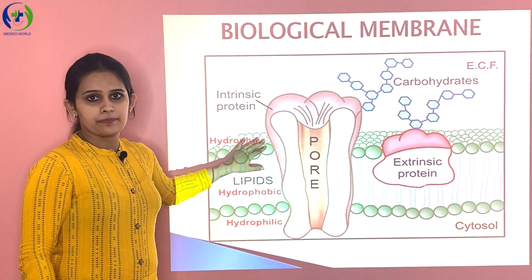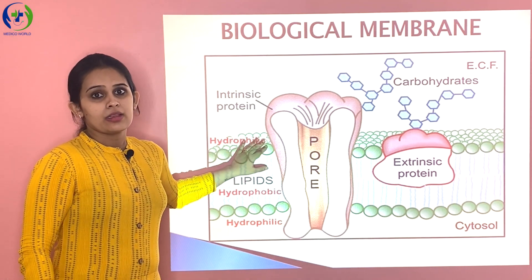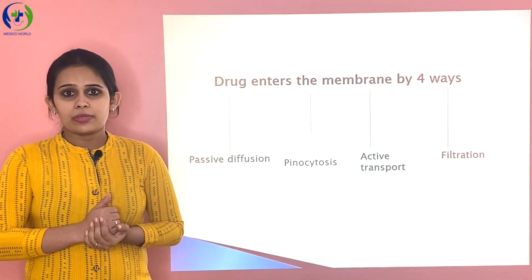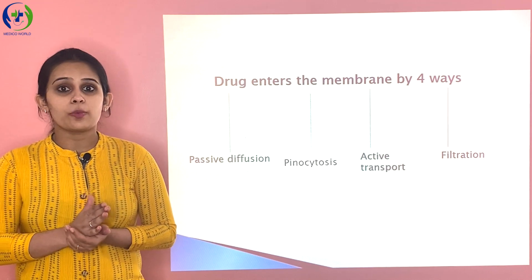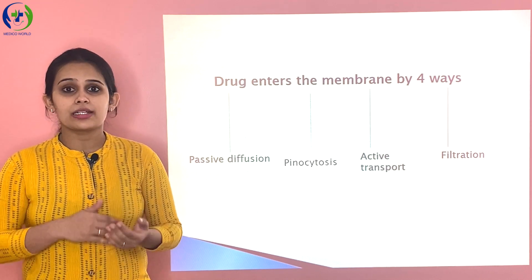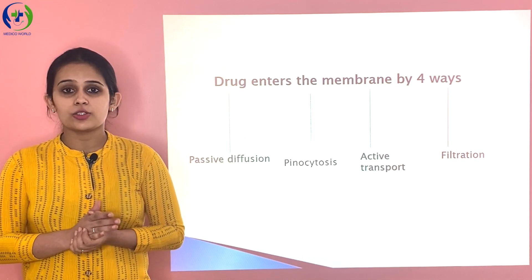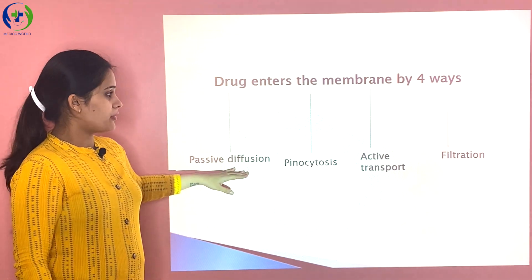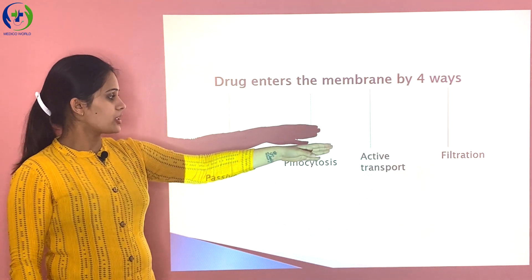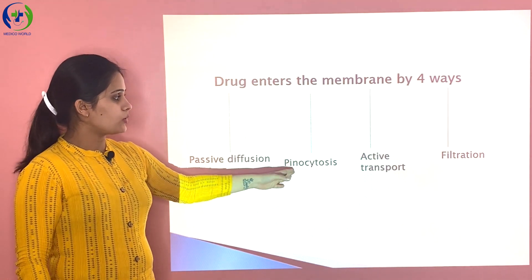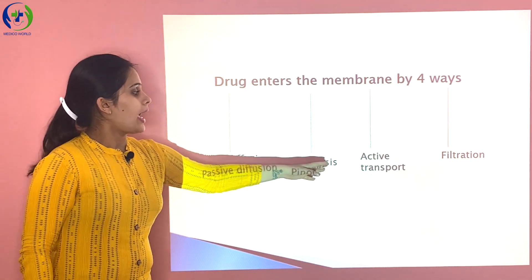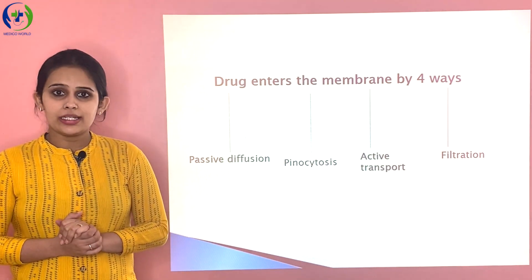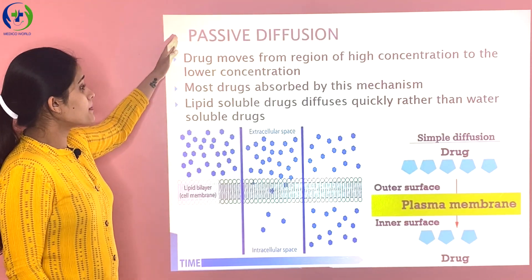Water soluble drugs enter the cell through the minute pores present between the cell membrane. Now, there are four ways by which drugs get transported across the cell membrane: passive diffusion, filtration, pinocytosis, and active transport. We will study each one in detail.